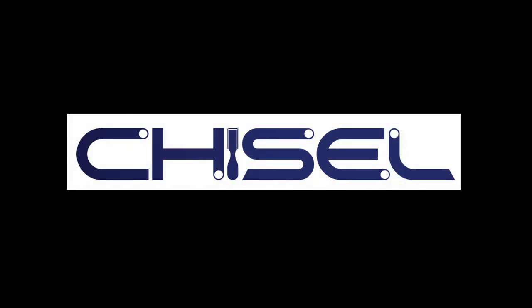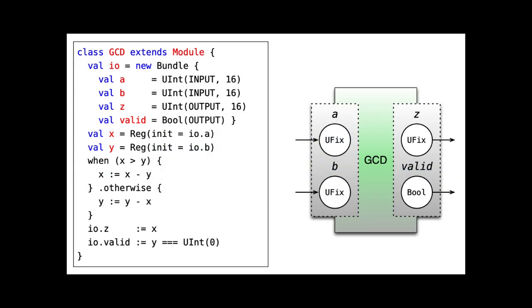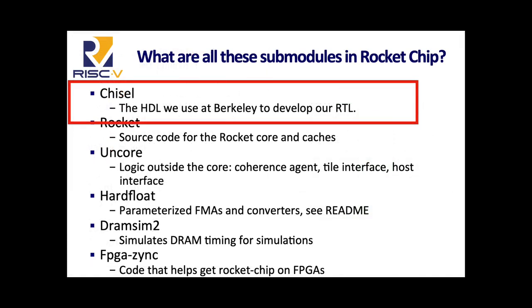I want to talk about two other projects. The first is Chisel, an alternative to languages like Verilog and VHDL that blends in certain software architectures since it is based on Scala. It is notable for being the HDL used in Berkeley's Rocket Chip, a RISC-V chip generator.